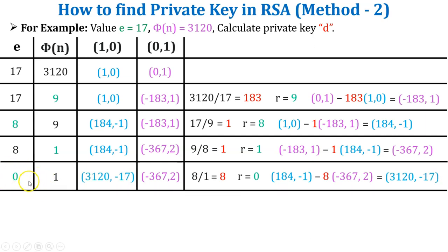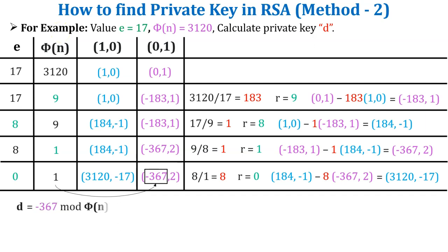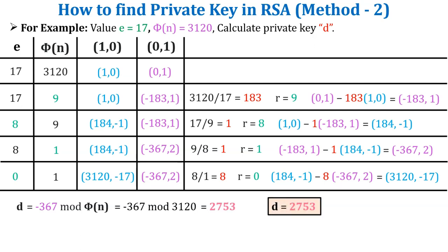Stop the calculation when you get the value 0 in either the e column or the phi of n column. Here value 0 is in the e column, so the private key component is the non-zero value. Here phi of n equals 1, so its corresponding vector value is −367. But the private key component cannot be negative, so d = −367 mod phi(n) = −367 mod 3120 = 2753. That is our private key.